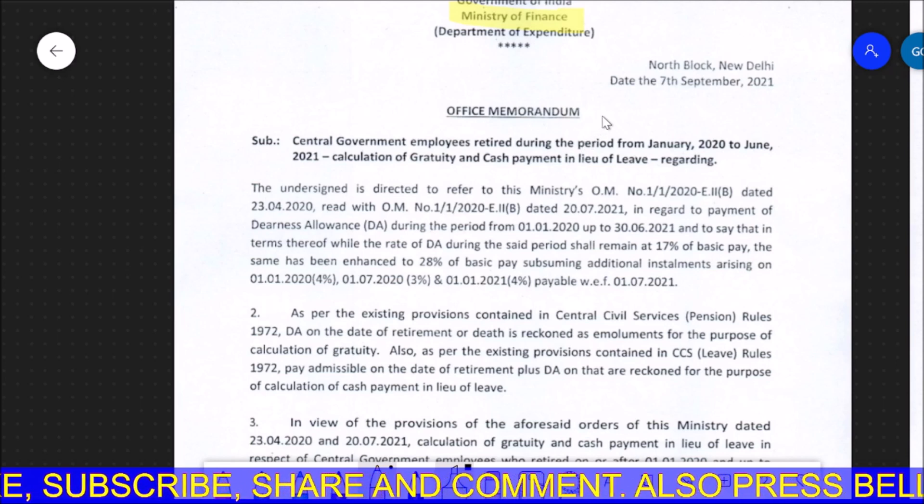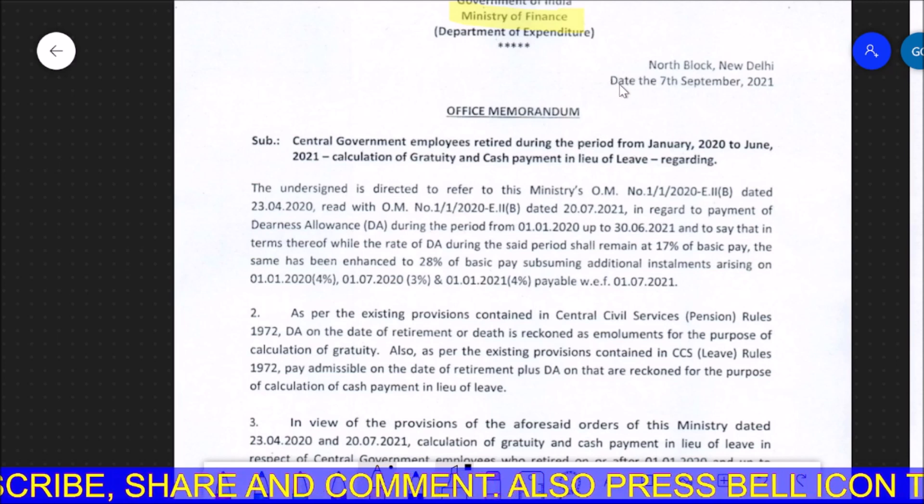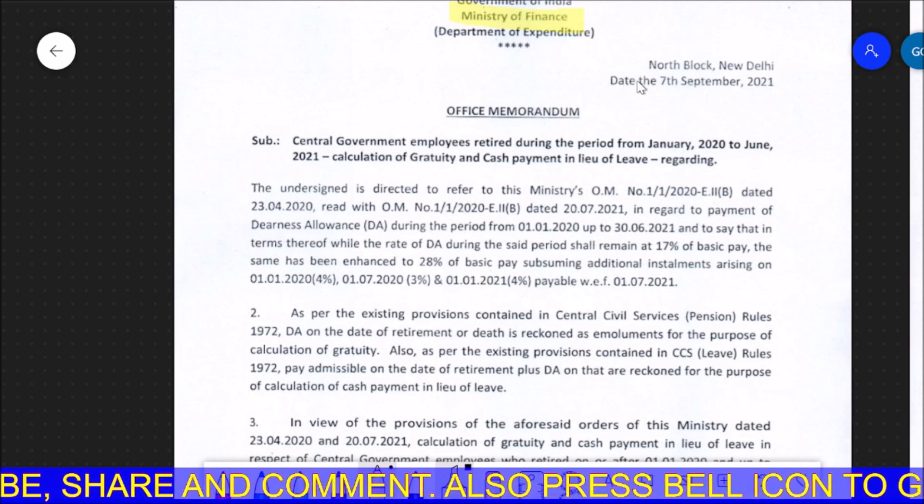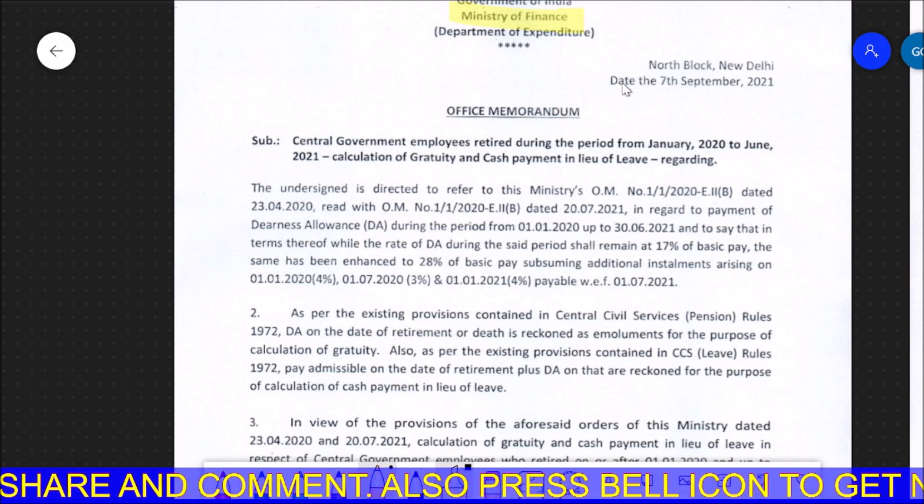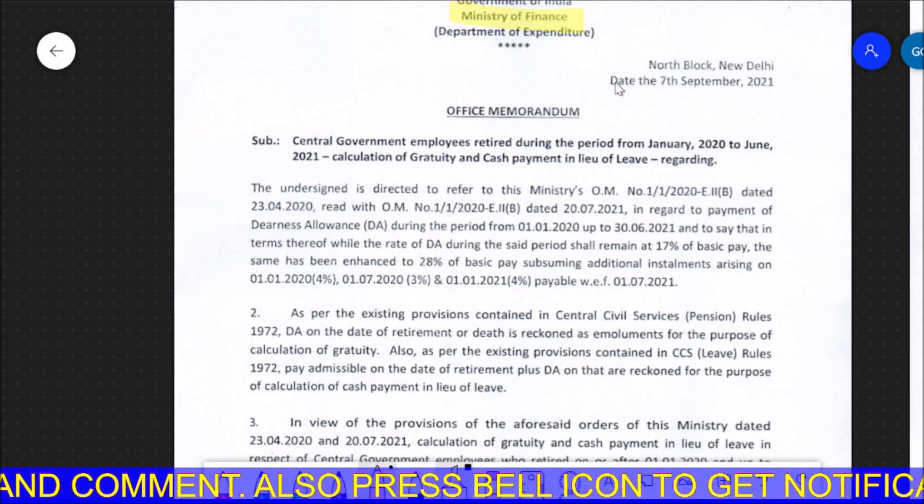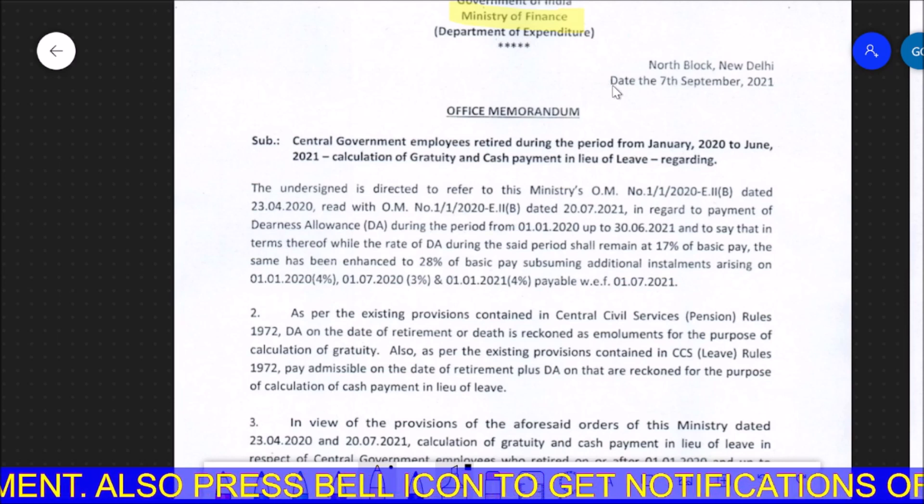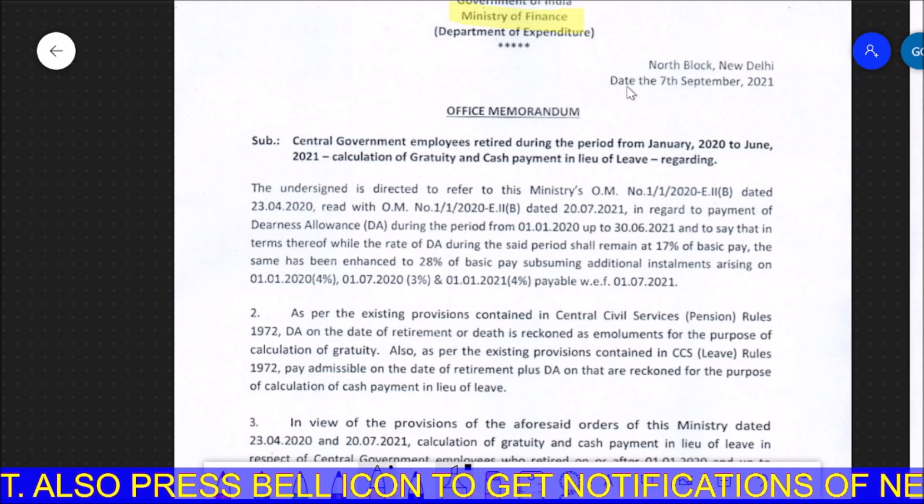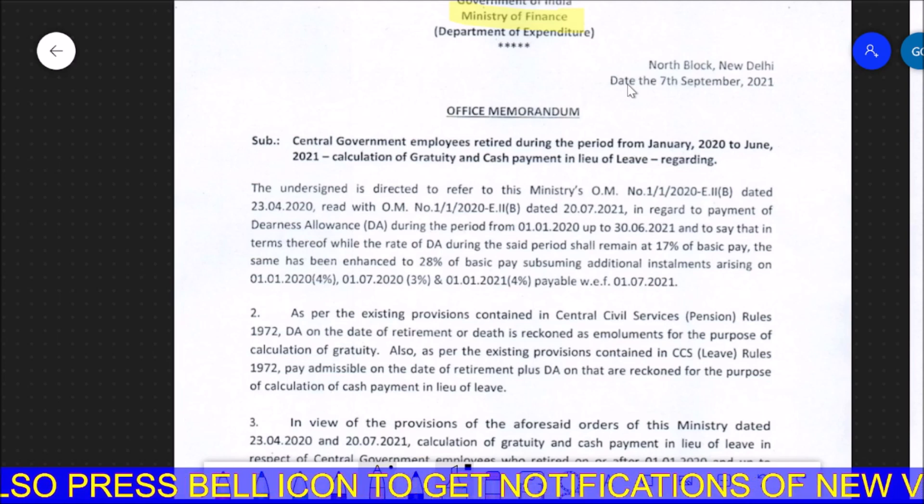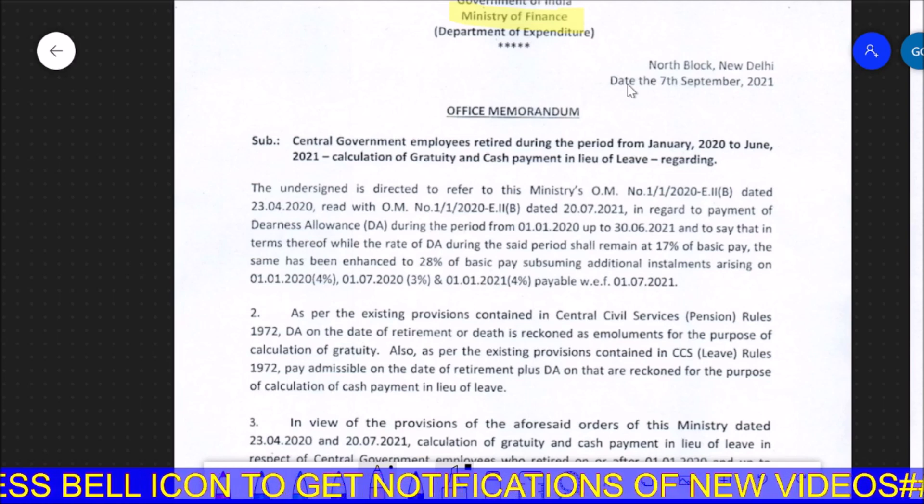As you know, during this period our DA was stopped. The DA was 17% on June 30, 2021. But people who retired during this period had a very big financial loss, because their gratuity, their leave encashment was compared to 17% DA.